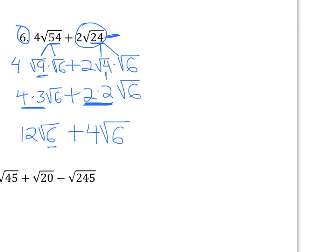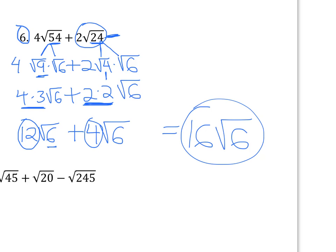And there it is. After you've simplified both radicals, you have the same number in the square root. So I can add 12 and four, which gives me 16, and then I just leave the square root of six — so 16 root six. You can see how number six definitely took a lot more work, so just take your time. Most likely for these problems, you're going to end up with the same number in the square root, so it kind of gives you a hint of what number you should get for the other square root after you work with the first one.